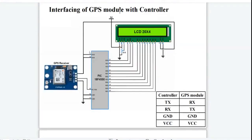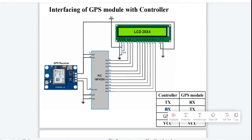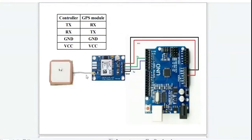The figure shows the interfacing of the GPS module with the controller. The TX pin of the controller is connected with the RX pin of the GPS module. The RX pin of the controller is connected with the TX pin of the GPS module. GND is connected with GND, and the VCC of the controller is connected with the VCC pin of the GPS module. The Arduino board is connected with the GPS module using 4 pins: TX, RX, VCC, and GND.